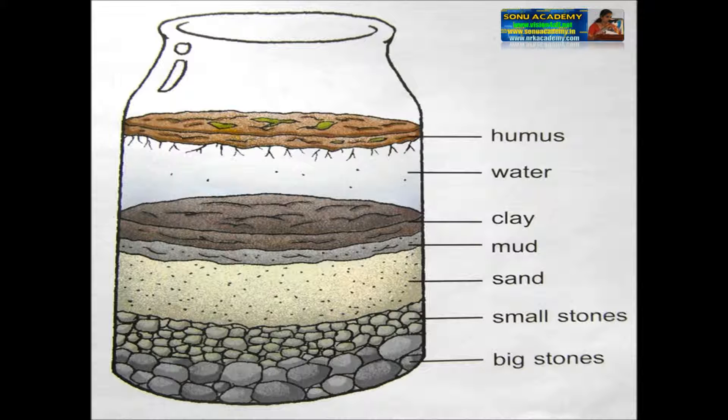Let us see what the soil contains. Put some garden soil in a jar bottle. Pour water in the bottle, put the lid on, and shake it well. Now let it stay still for several minutes.